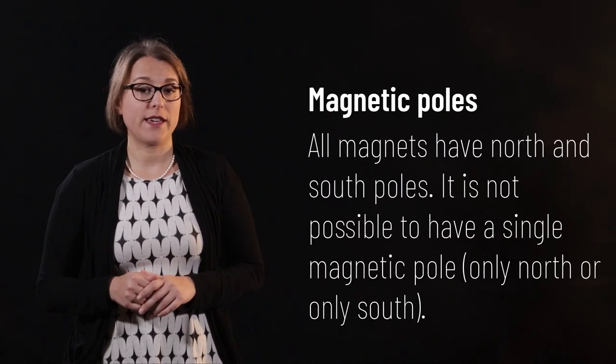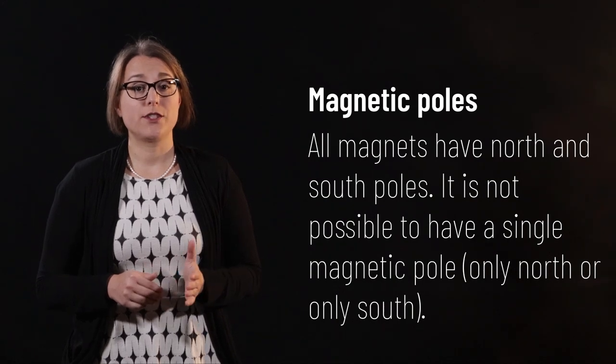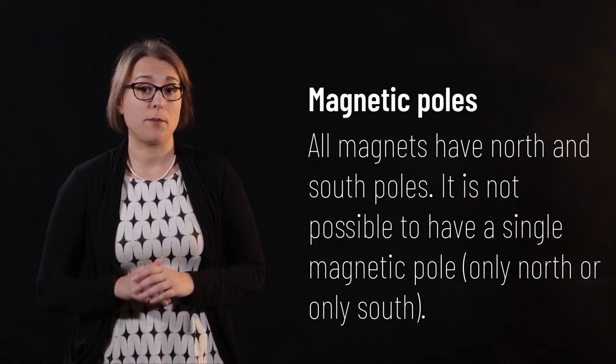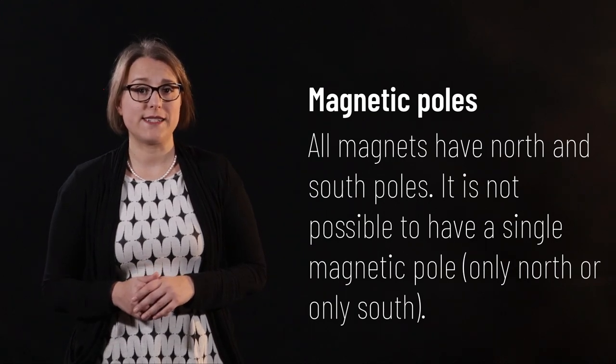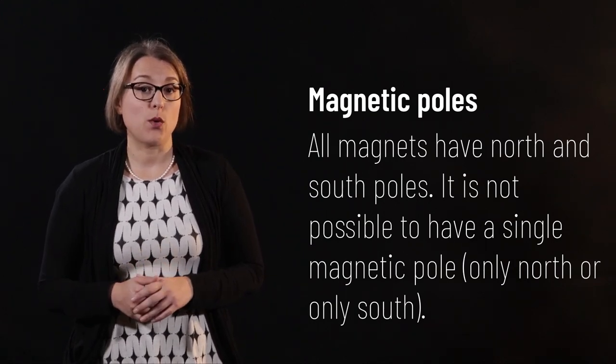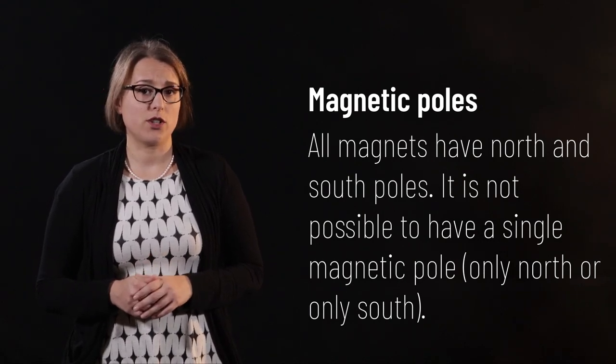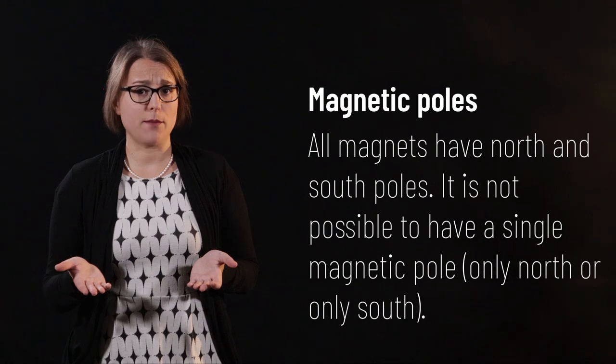All magnets have both a north and a south pole. As far as physicists are currently aware, there is no way for a magnet to have only a north pole or only a south pole. Magnetic poles exist in pairs. This leads to an interesting question. What happens if we break a magnet in half?